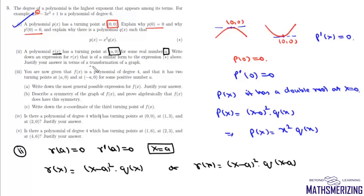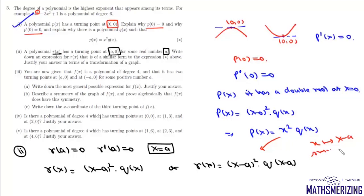To justify this in terms of transformation of a graph: in the first case we had p(x) = x²·q(x) with a double root at 0, and in the second case r(x) = (x - a)²·q(x - a). By comparing the two, we can get r(x) from p(x) by replacing x with x - a, which is shifting the graph of p(x) by a units along the x-axis.